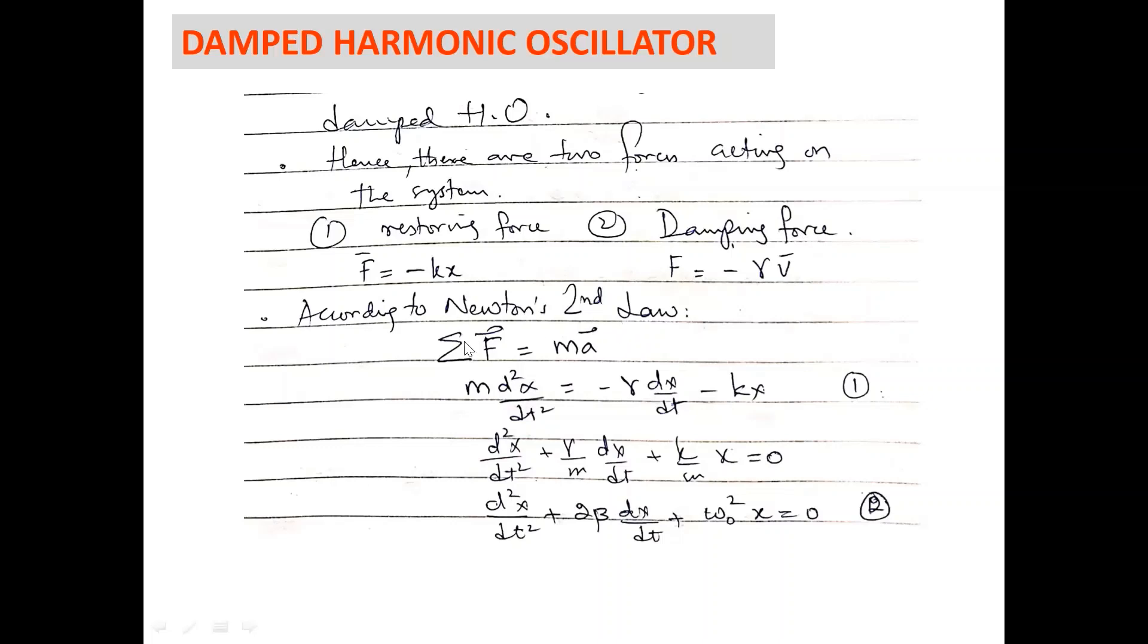According to Newton's second law, summation of all forces equals ma, which can be written as m second derivative of x equals minus gamma dx over dt minus kx. This can be simplified as second derivative of x with respect to t plus gamma over m dx over dt plus k over m x equals 0.